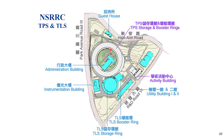That is the new synchrotron radiation facility — the Taiwan Photon Source — and the old one is the Taiwan Light Source. The photo I just showed is the old source. We have the Taiwan Light Source booster ring, the Taiwan Light Source storage ring, and the new Taiwan Photon Source storage ring, which is much larger. Tsinghua University is located here.